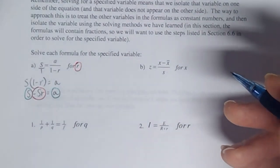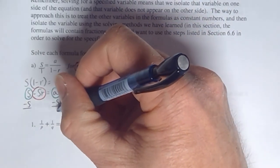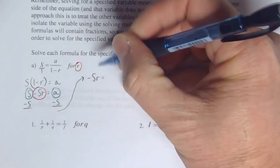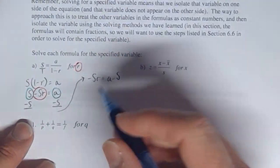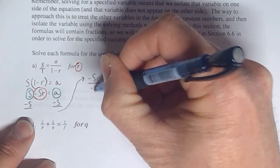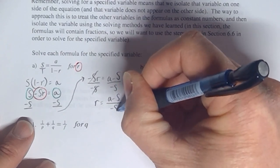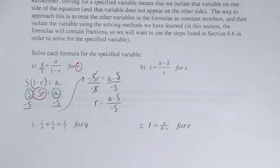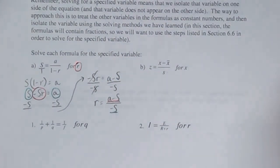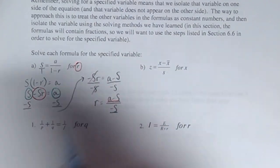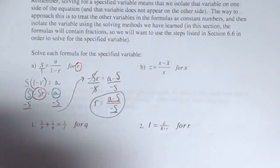So anything that doesn't have R in it is the green term. When you get to this step of a linear equation, move the green ones to the opposite side of wherever the red term is. We end up with this. Then you divide out to get the variable completely by itself, and we get R equal to A minus S over negative S. You cannot cancel the S's there, because the numerator has two terms — that's a red factor — and the denominator is a single term, which is green. You can never cancel red and green. So I'll leave the answer just like that.